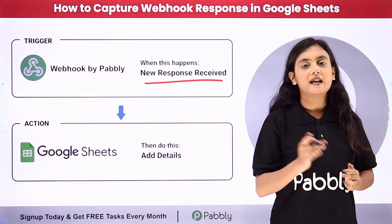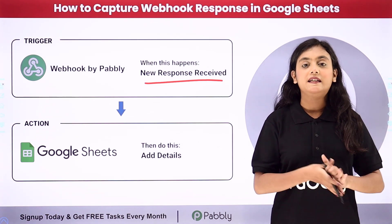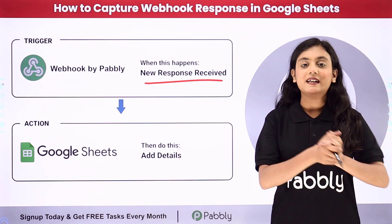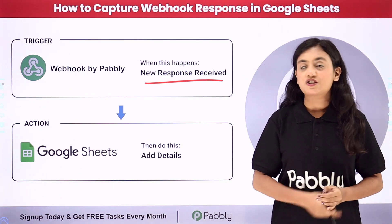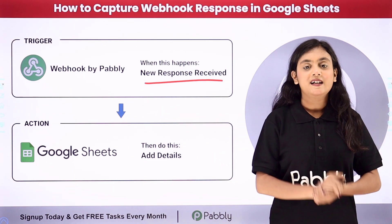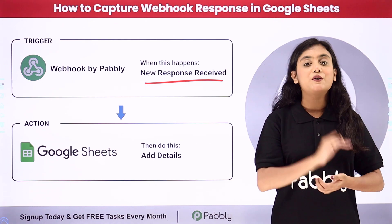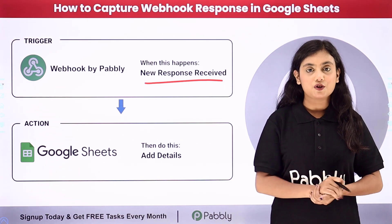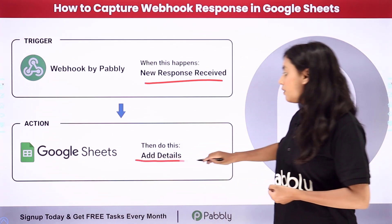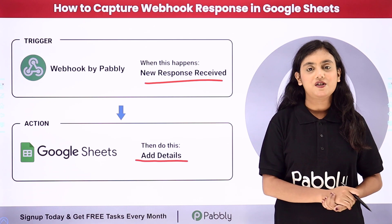Suppose you are using an application which is not natively integrated with Pabbly Connect. To create the native integration, we are using webhook by Pabbly. So with the help of webhook by Pabbly, whenever a webhook response is going to be captured, automatically I want to create the record of that response in my Google Sheets.